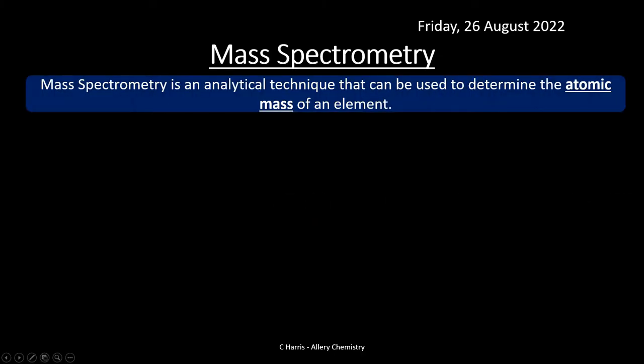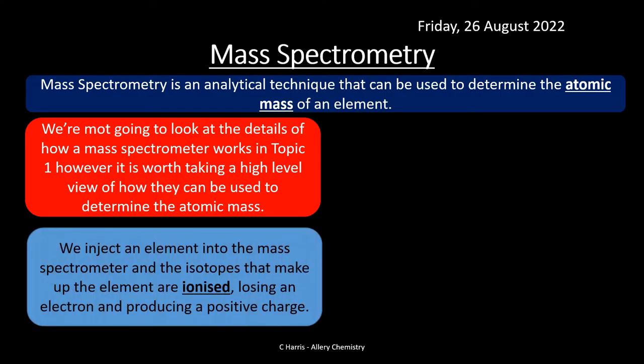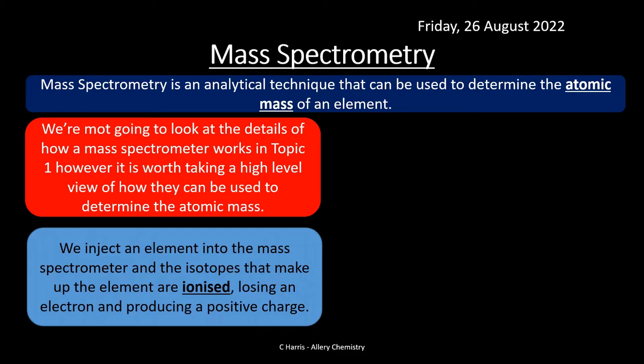Mass spectrometry is a bit trickier — you have to do a little more work with this. Mass spectrometry is an analytical technique that can be used to determine the atomic mass of an element. We're going to look at how a mass spectrometer works at a high level. We inject an element into the mass spectrometer, and the isotopes that make up the element are ionized — losing an electron and producing a positive charge.